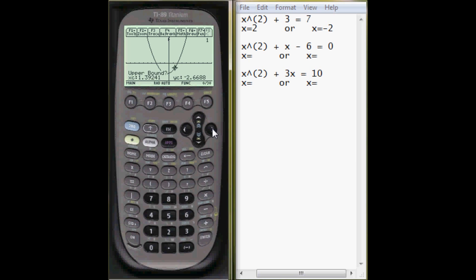Upper bound is scroll over, and she's on the other side of where it intersects the x-axis. Or y equals 0, same thing. And press enter. And the zero turns out to be x equals 2.